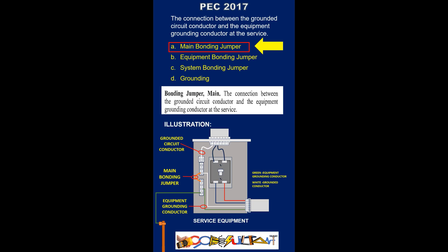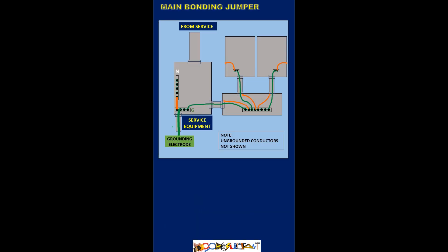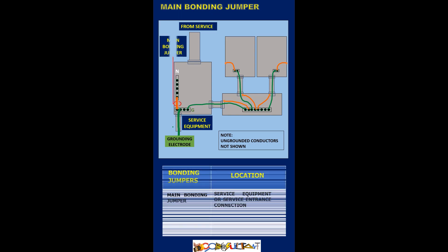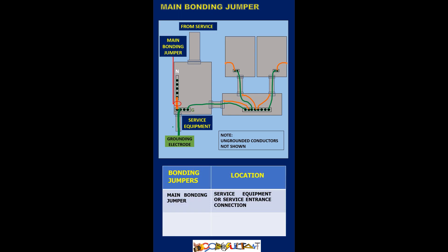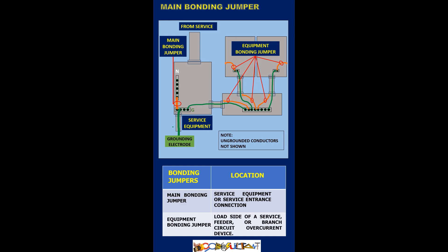Sometimes the grounded conductor is linked to the grounding electrode conductor. It's important to differentiate between an equipment bonding jumper and a main bonding jumper. The main bonding jumper is located in the service equipment, while equipment bonding jumpers are installed on the load side of a service feeder or branch circuit overcurrent device.